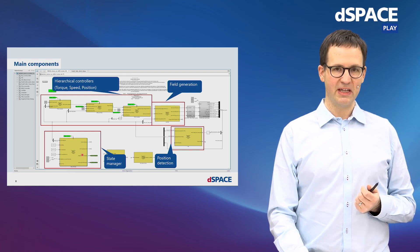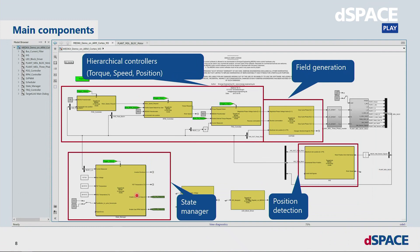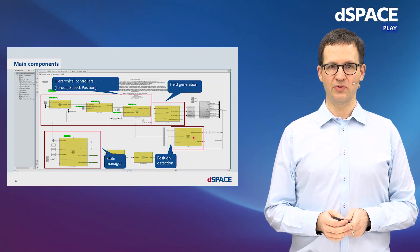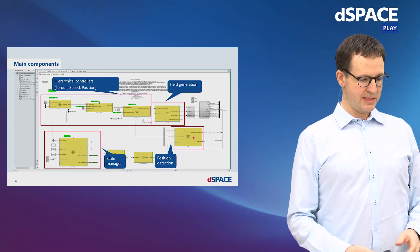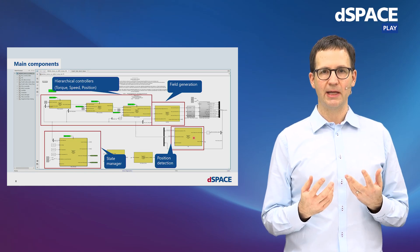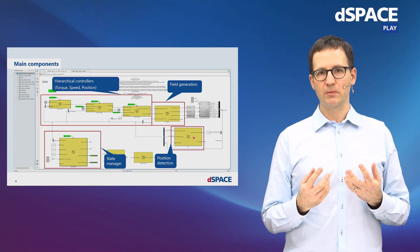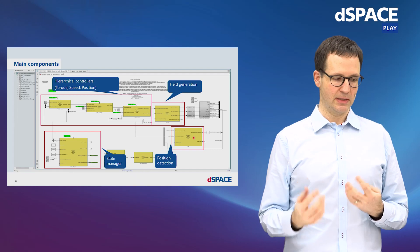On the bottom left, we have a state manager — a state chart-based component which implements the switch through the modes that happens when I press the button. An important part is also the position detection unit, which measures the current position of the motor. So, let's go into the model itself to take a closer look, where I want to highlight a couple of benefits of using model-based development and showcase a couple of ways of working with TargetLink.